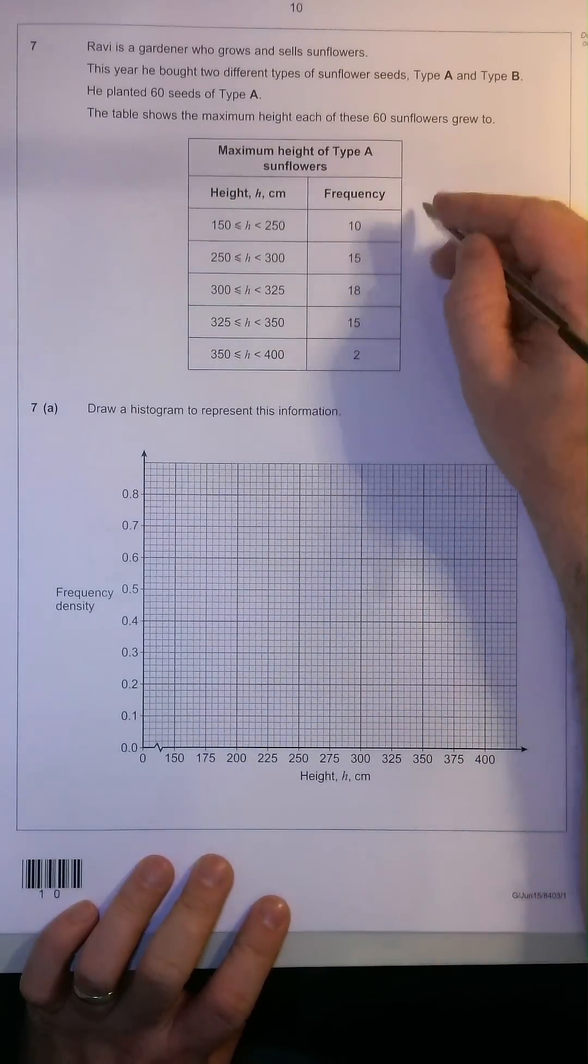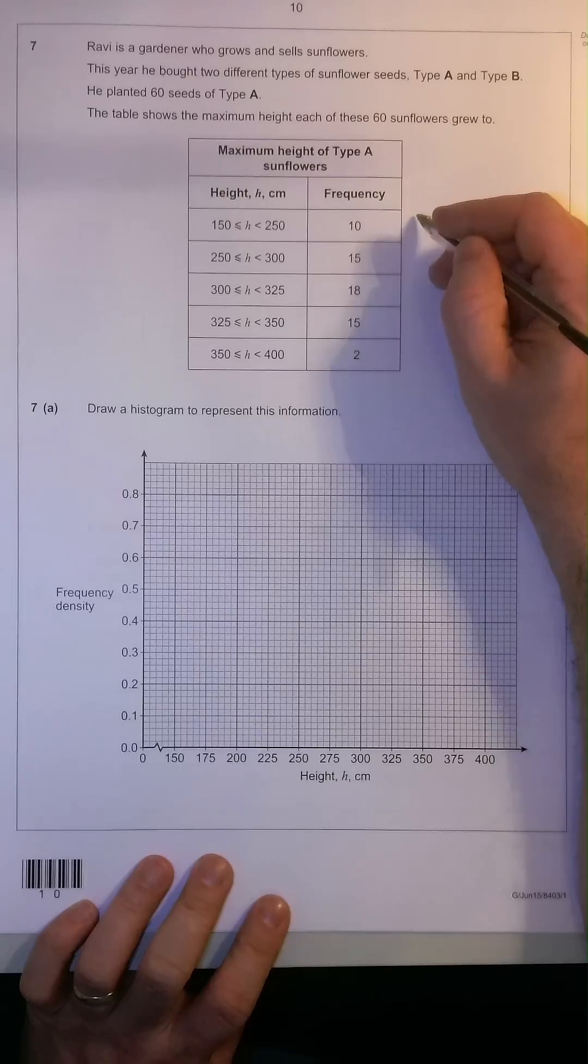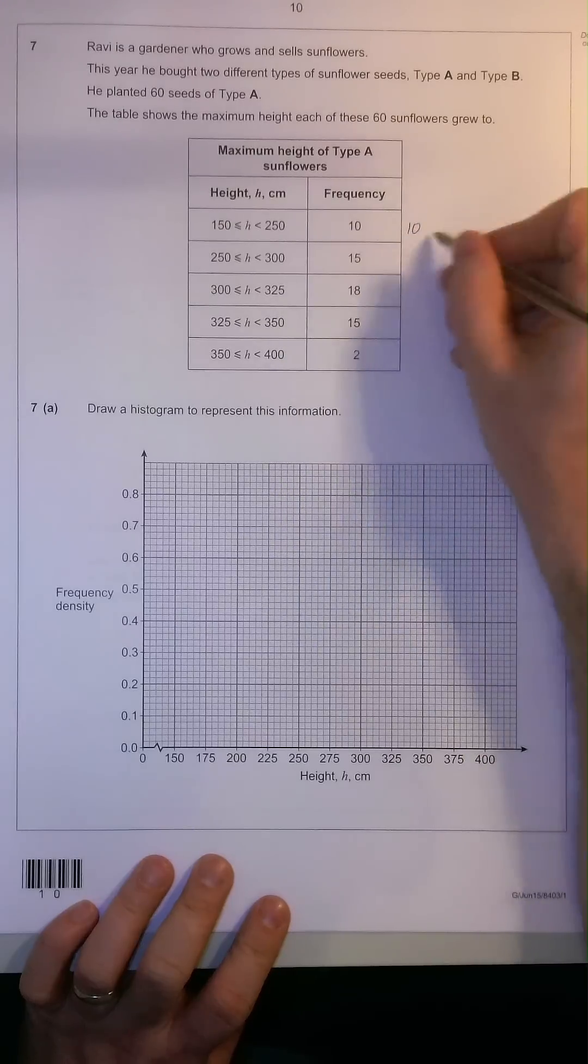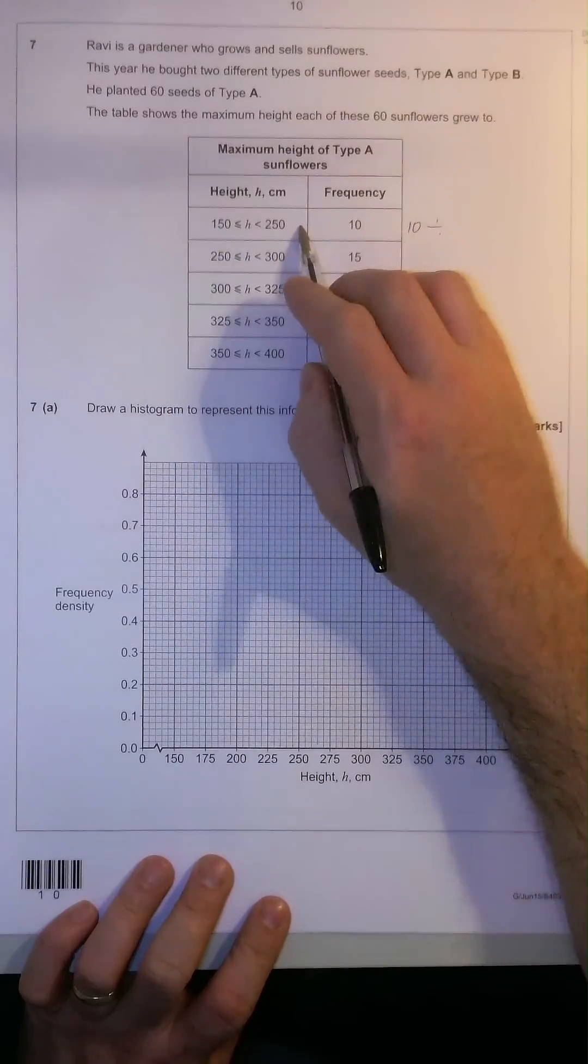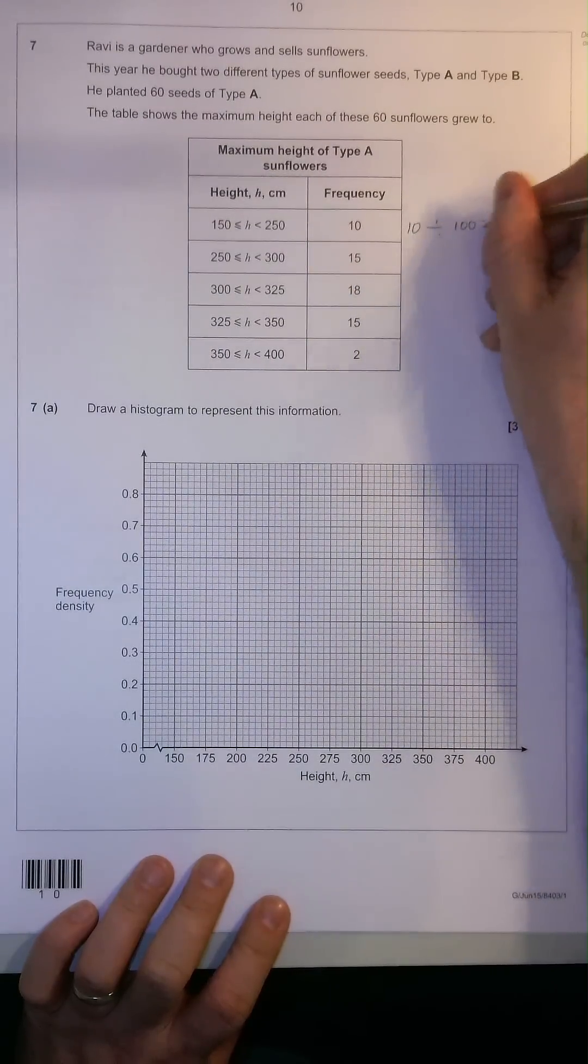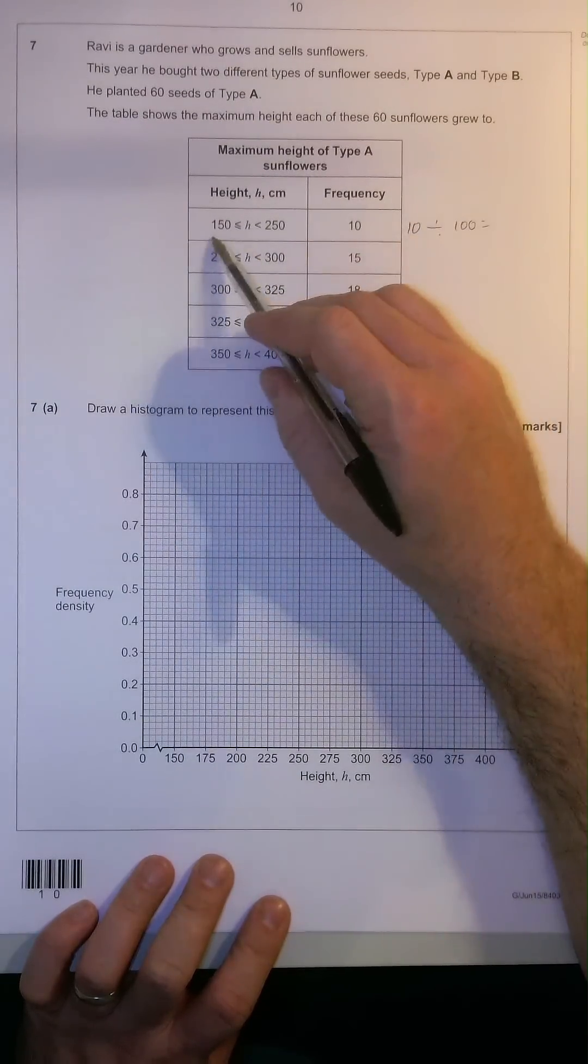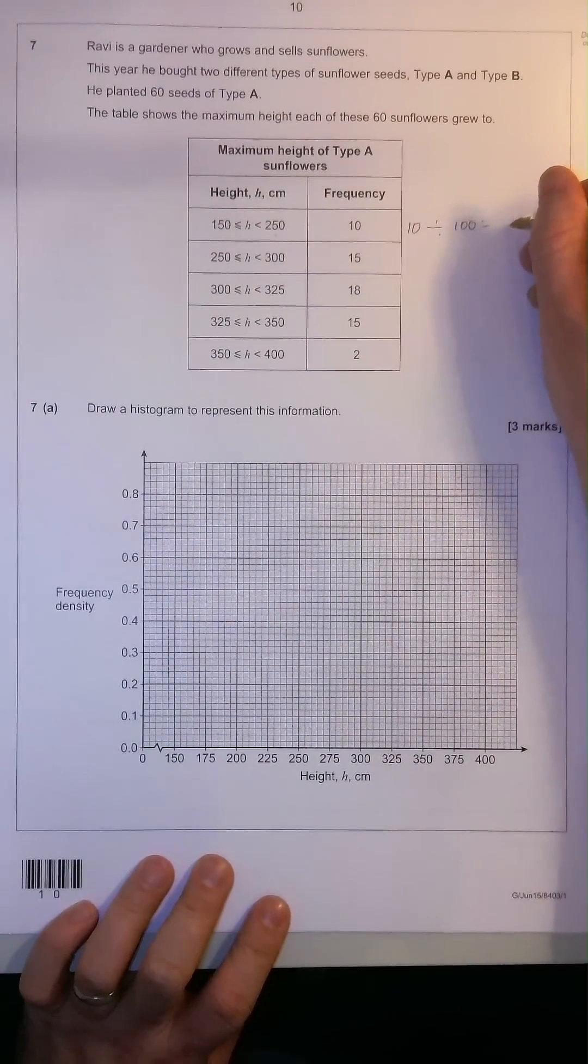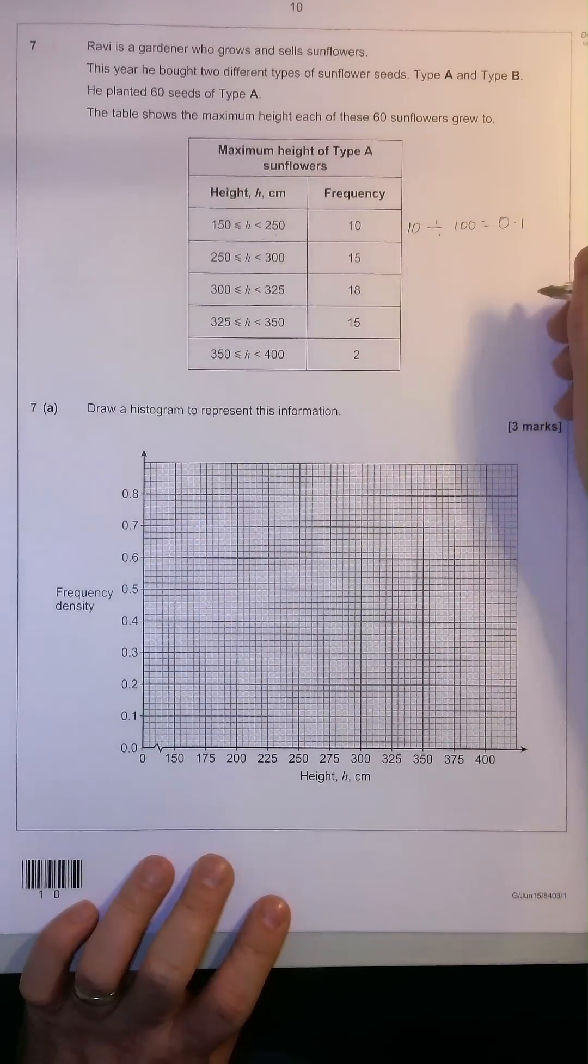Now, to work out how high the actual column needs to be, firstly, we need to take our frequency, which in this case is 10, divide it by the range here. 150 to 250 is 100. So therefore, for our first column between 150 and 250, we need to make it 0.1 high.